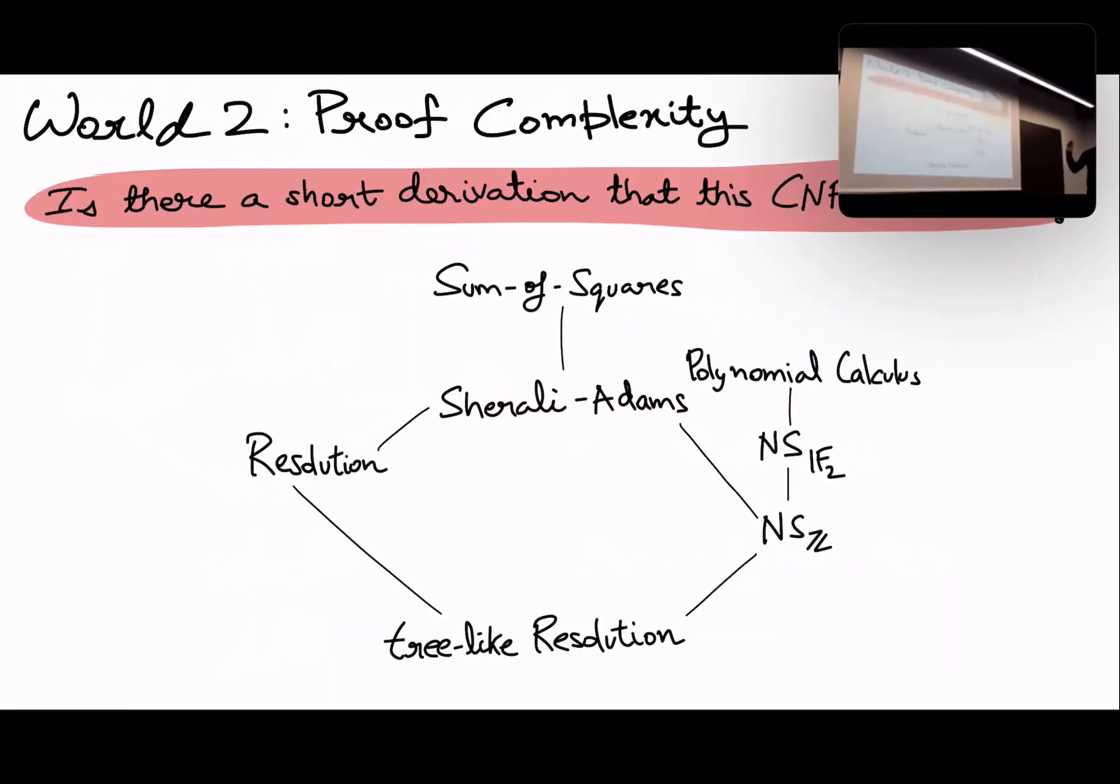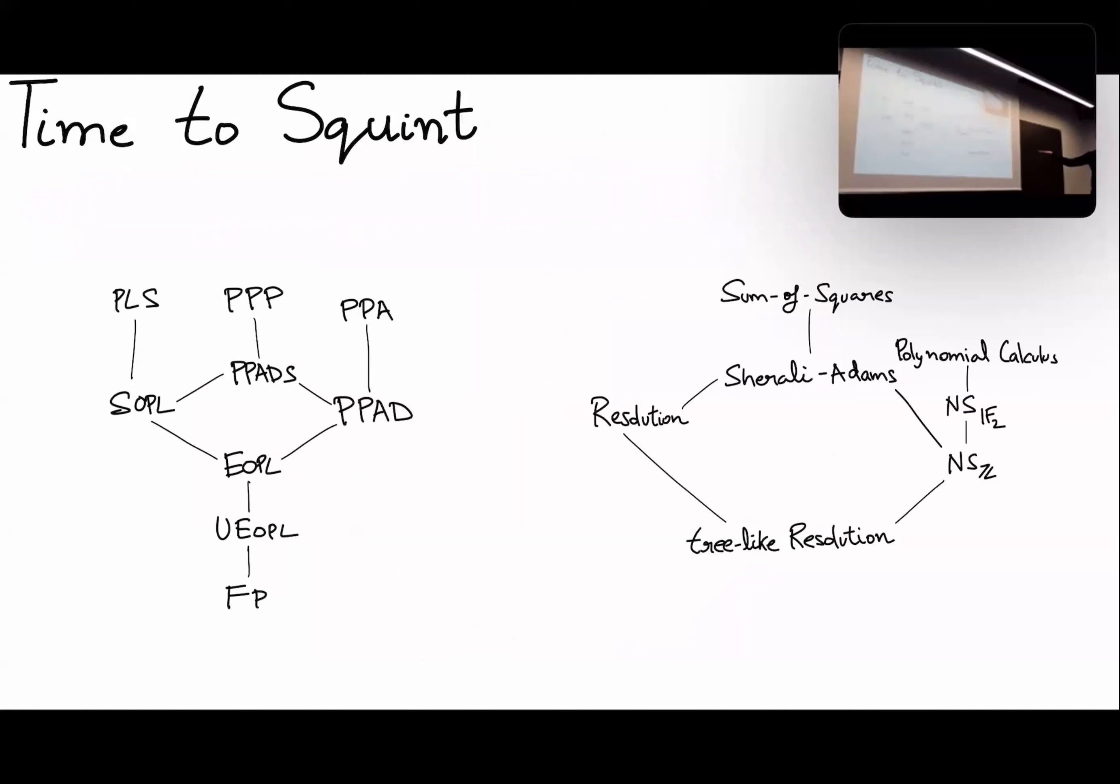Okay, great, thanks. Okay, the second world is proof complexity, which is, is there a short derivation of the CNF as contradictory? Again, I don't need to tell you. And here I've drawn a picture of proof systems where I put an edge if the proof system on the top simulates the proof system at the bottom. I think I might be missing an edge between polynomial calculus and this, but you get the idea. Why did I draw this picture? Well, look at it. There must be something going on there. It looks too similar.